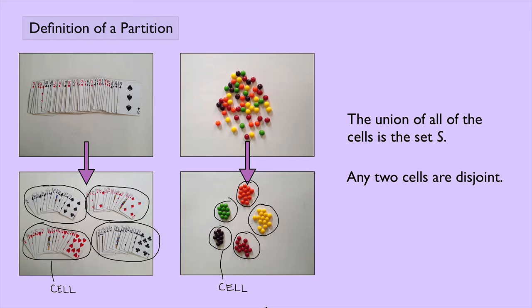Another thing we see is that any two cells are disjoint. Look at the, say, the orange candies and the yellow candies. There are no orange candies in the yellow set, and there are no yellow candies in the orange set. In other words, these two cells are separate from each other. There's no overlap here. And that's true of any two cells that you take. They are disjoint. That's what that word means.